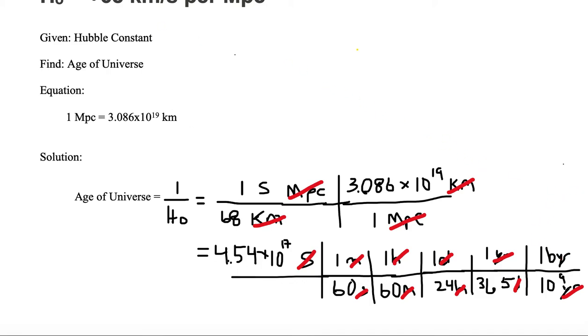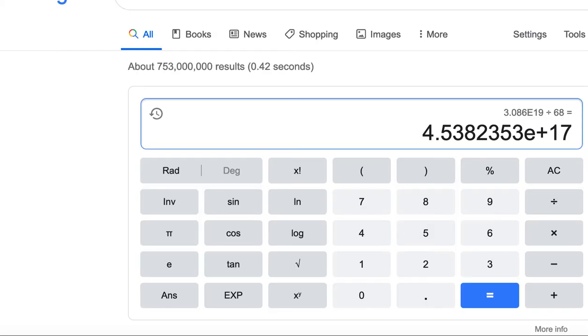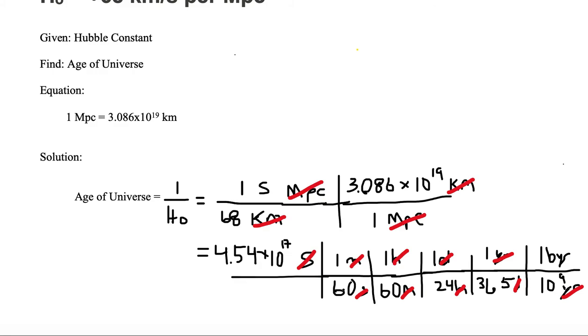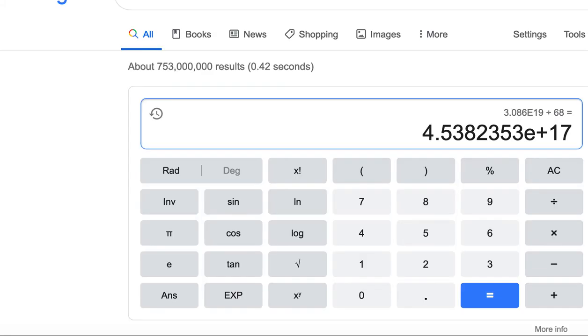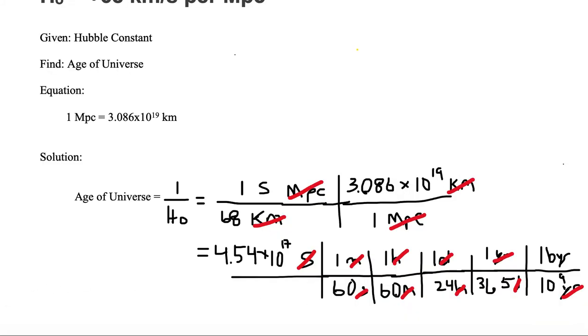So let's multiply this out. We've got 4.54 times 10 to the 17th, which is already there. And then we need to divide by 60 and divide by 60. So we divide by 60, hit equals, we need to divide by another 60. So we divided by 60, divided by 60.